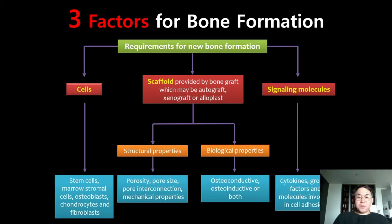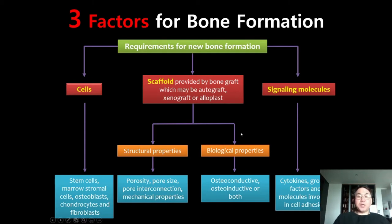To make bone, we need bone-forming cells — osteoblasts. Inside the human body, only osteoblasts can make bone, and osteoblasts come from mesenchymal stem cells. To make new bone, we also need to resorb the old bone, so we need osteoclasts as well. We also need a scaffold, provided by bone graft material — autogenous, allogenic, xenogenic, or alloplastic material. When selecting the graft material, we should consider structural properties: porosity, pore size, and pore interconnection, as well as biological properties, which vary according to the kind of graft material.